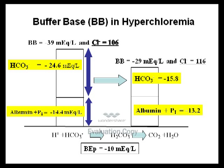In hyperchloremia, starting with chloride of 106 and bicarbonate of 24.6 mEq/L, the non-volatile weak acid buffers (albumin, phosphate, citrate) contribute negative 14.4 mEq/L. When the buffer base contracts to negative 29, bicarbonate must contract to 15.8 mEq/L. A metabolic acidosis ensues, and the base excess of plasma approximates both the change in bicarbonate and the change in plasma chloride.